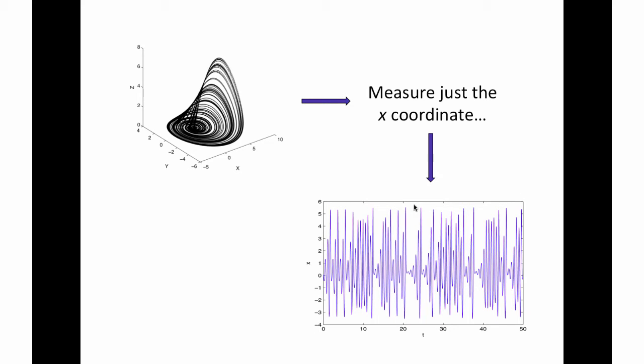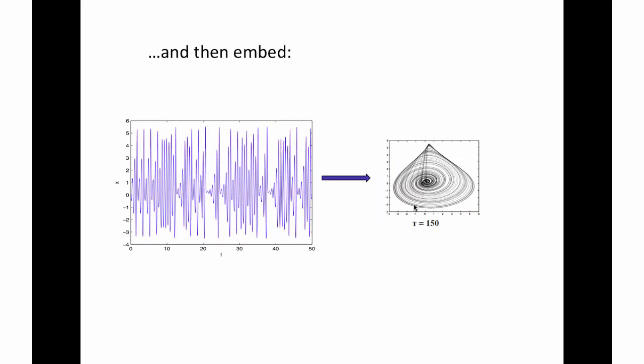Here's an example. Let's say I sample the x-coordinate of that attractor to obtain the time series at the bottom right. Then let's say I embed that time series in two dimensions with tau equals 150. I get that thing on the right. Now there's a bunch of underlying theory about the delay and the dimension that you need to do in order to get this to work.